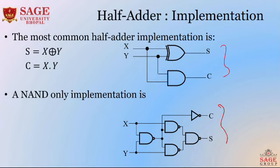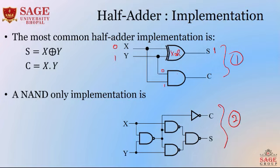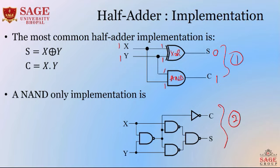For example, passing x=0 and y=1: the XOR of 0 and 1 produces sum 1, and the AND of 0 and 1 produces carry 0. Another example with x=1 and y=1: the XOR of 1 and 1 is 0, and the AND of 1 and 1 is 1. So we get sum 0 and carry 1 when both inputs are 1.